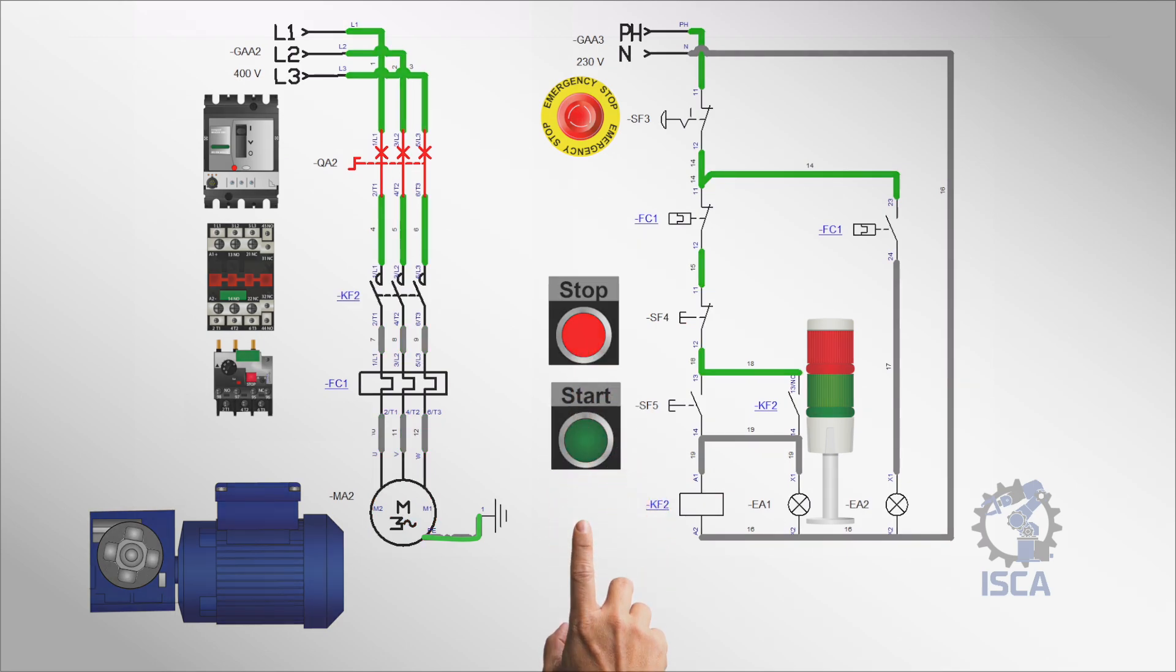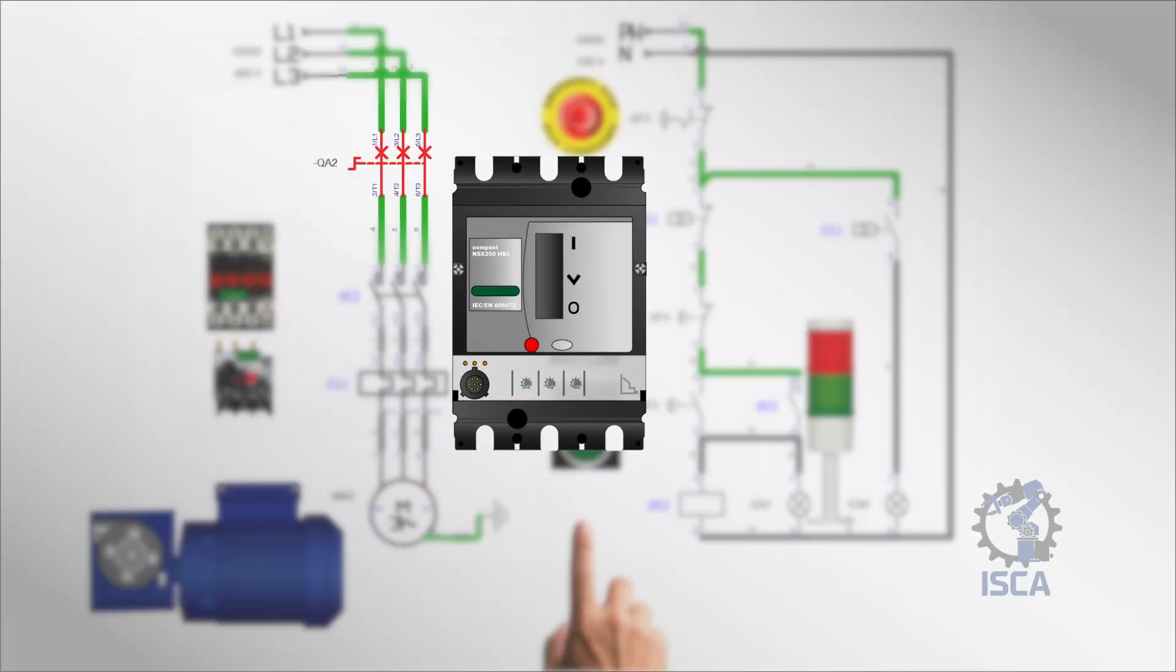Now we'll break down each component of this direct online starter. Circuit breaker: this device automatically interrupts the flow of electricity in a circuit when it detects a fault condition. It's designed to protect electrical circuits from damage caused by overload or short circuit. Circuit breakers can be reset after they've been tripped, unlike fuses which need replacement. In a DOL starter, the circuit breaker is the first line of defense against electrical faults.